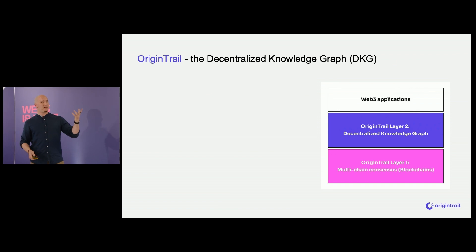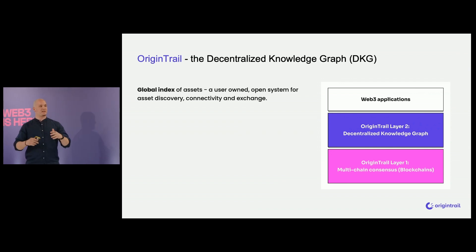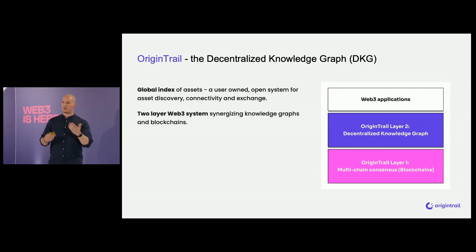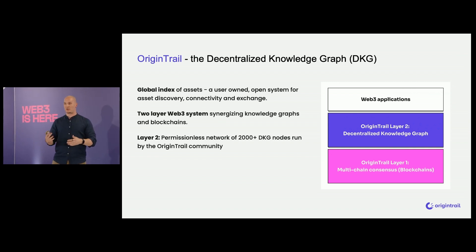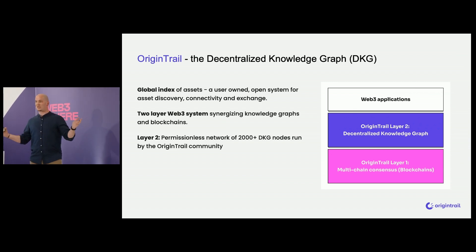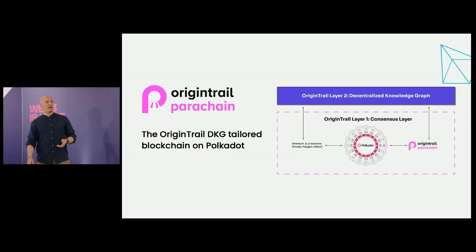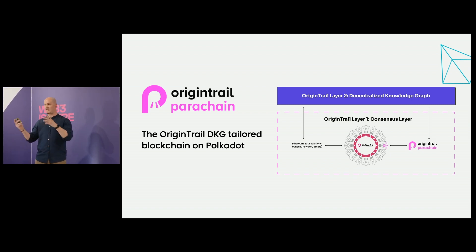Combine those two and you get OriginTrail — the decentralized knowledge graph — which has two layers. It's a global index of user-owned assets: an open, permissionless system enabling asset discovery, connectivity, and exchange. It's a two-layer Web3 system synergizing knowledge graphs and blockchains. Layer two is the decentralized knowledge graph, live since late 2018 on mainnet, run by over 2,000 nodes hosted globally, permissionlessly and decentrally by the OriginTrail community. Layer one is a selection of blockchains — you can pick which one to use. The OriginTrail parachain is launching June 4th on Polkadot, but OriginTrail also runs in parallel on Ethereum and sidechains like Polygon.